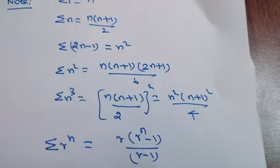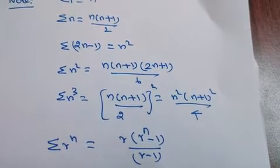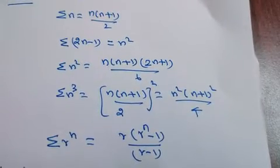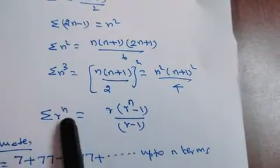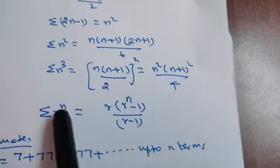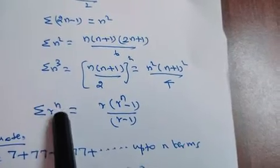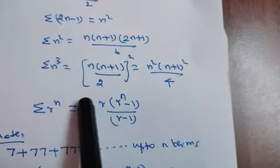Sigma n cube is n into n plus 1 whole square and n square into n plus 1 whole square. We have a sigma 6. If n equals 6, 2 equals r. We have an r plus r. We have a formula.